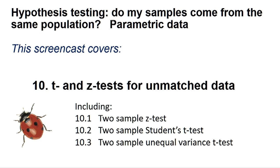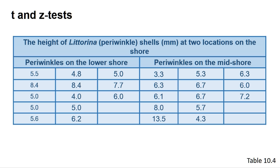These tests are for when you want to assess if two samples are likely to come from the same statistical population or not. We often take samples from different situations and find the data varies. The question is whether these differences are due to random variation or whether the unique qualities of each sample situation created this difference. Take the data from Table 10.4 — we measured the height of periwinkle shells from the lower and mid-shore. Does the position on the shore dictate how high a periwinkle shell will grow, or is the variation just due to non-perfect sampling?